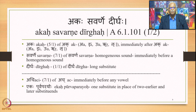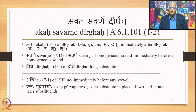Akas Savarane Dirgaha has got three padas. The first one is Akaha, which is the fifth-case singular of Ak. Ak is a Pratyahara that takes into account the first two Pratyahara Sutras, namely Ayun Ruluk, thereby capturing the five vowels: A, I, U, Ru, and Lu. So Akaha means immediately after Ak — that is, immediately after A, I, U, Ru, and Lu. The second word in the Sutra is Savarane, seventh-case singular of Savarna. Savarna is a homogeneous sound, and Savarane means immediately before a homogeneous sound.